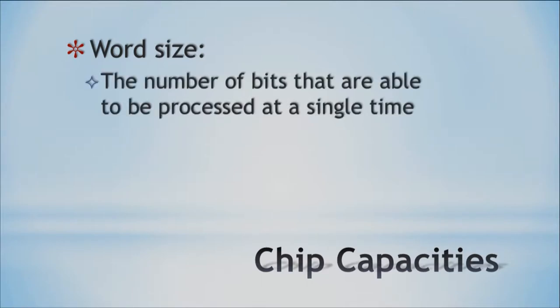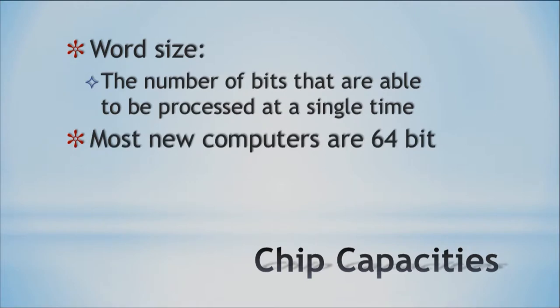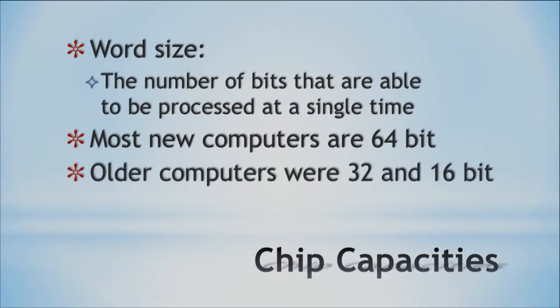Next, we're going to look at chip capacities. There's something called a word size, which is basically the number of bits that the CPU is able to process at one time. Nowadays, most new computers are actually 64-bit machines. When you hear that a computer is a 64-bit machine, this is what it's referring to — the word size that can be processed at a single time. This is a great upgrade because earlier systems were either 32-bit or 16-bit, so we're able to do a lot more computations on larger numbers now.